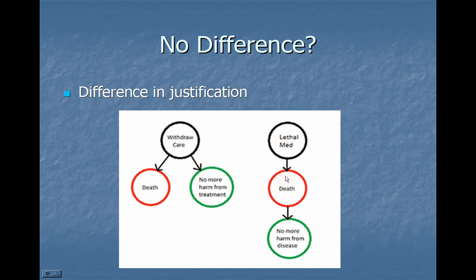Contrast that with assisted suicide: you give a lethal medication which causes death, which then leads to the effect of having no more harm or burden from the disease. In this case, there's no way to get to the goal of having no more burden of disease except through death — the treatment works by killing you, and that's the only way to get to the end. In withdrawing, the good end follows immediately from the action. There are essentially two effects: one bad and one good, and the good one can justify the bad one because the bad one is not the means to the end. In assisted suicide, it's different. You can see from the diagrams how the causal structure is different. That's a major moral difference.